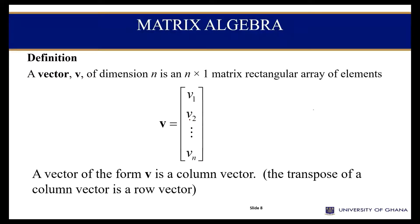A vector of that form, V, is a column-word vector, which we can transpose along the line into a different form of a matrix.